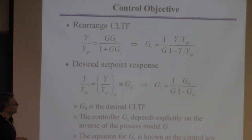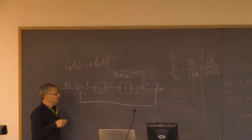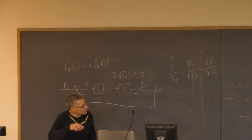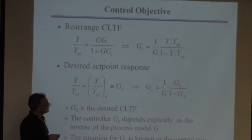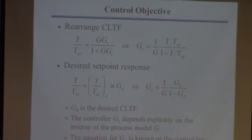Notice the controller transfer function involves 1 over G — it's proportional to the inverse of the process transfer function. The way to think about that is: if you want some arbitrary response Gd, the first thing the controller has to do is cancel G, because the dynamics of the loop clearly depend on G. So the controller eliminates the effect of G by canceling it, and then puts in what it wants in its place, which is Gd.